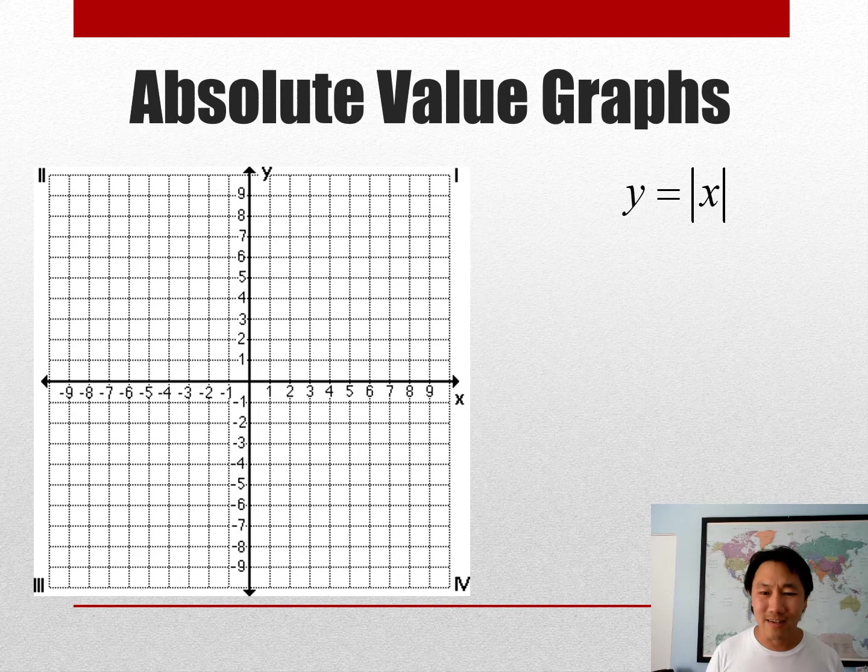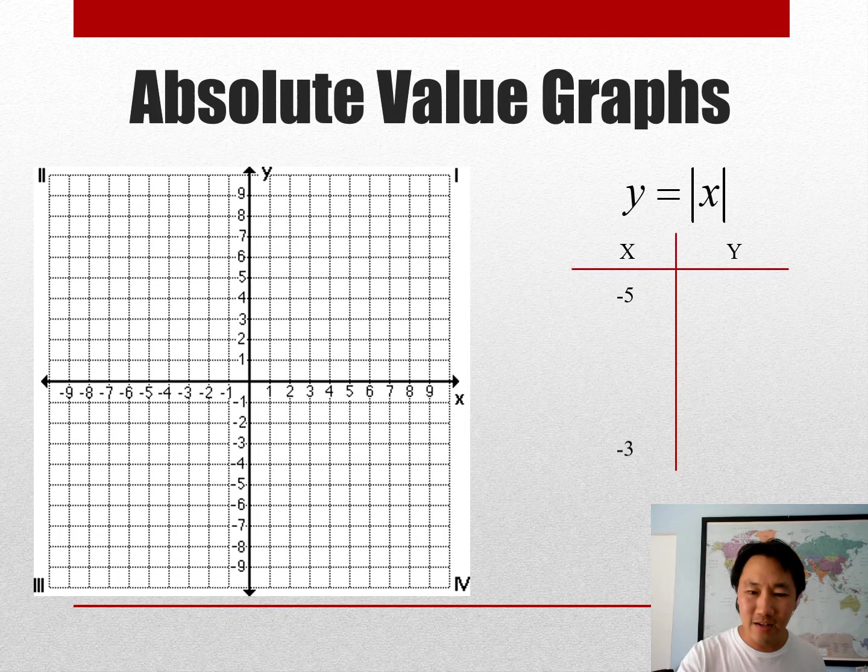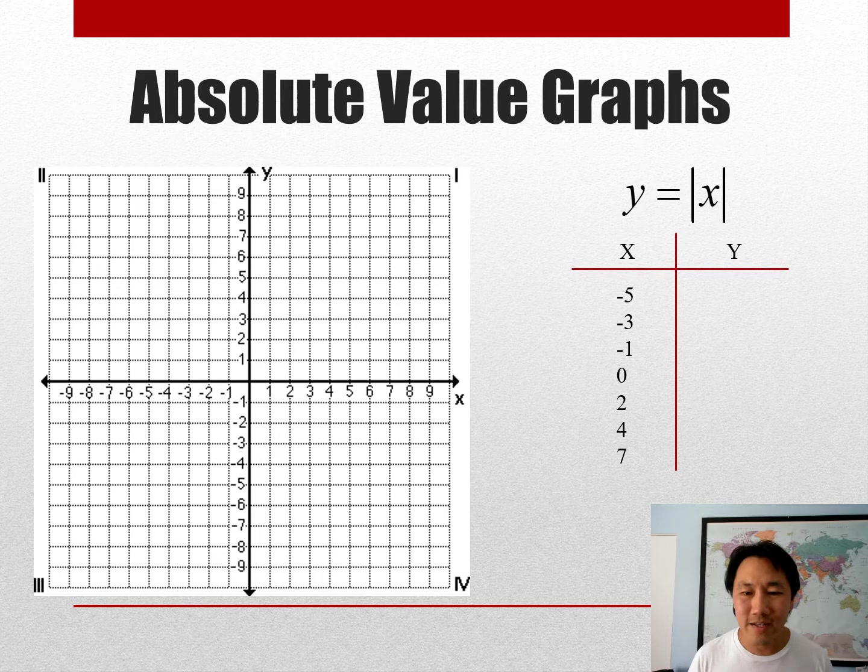We're going to go ahead and see what that looks like. We're going to do it the old-school way by making a little t-table. We're going to put some numbers in. You always want to put some examples of negative numbers, you always definitely want to know what's happening at zero, and then also put some positive numbers in.